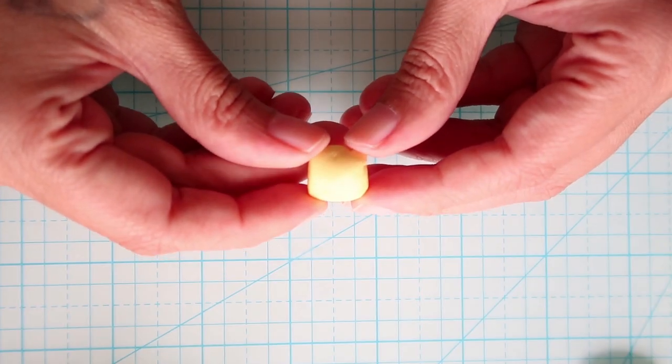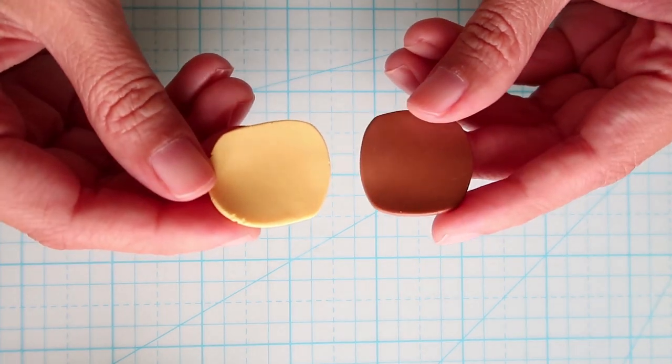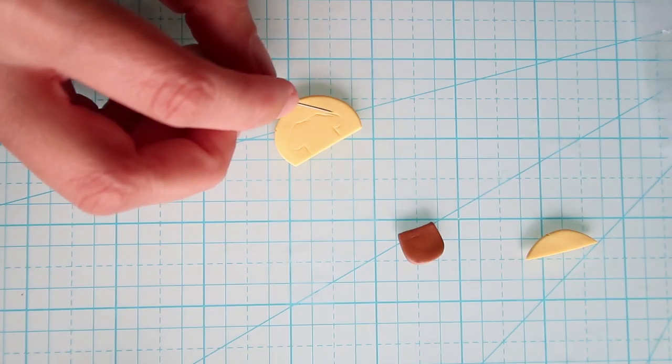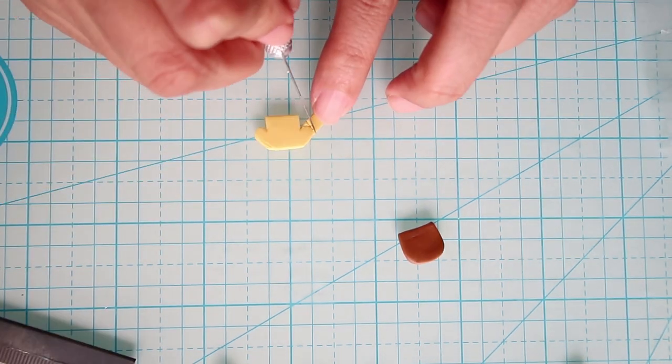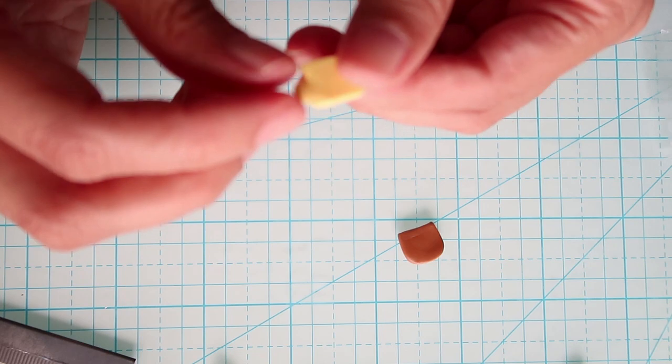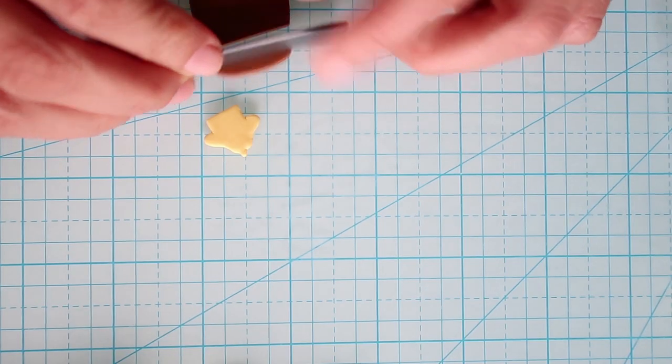Now we're going to make the chair, so roll out a piece of yellow clay and brown clay to the same thickness and then using your needle tool, mark out the design of the chair then using a blade just cut off the excess like this and then smooth the edges so it's nice and rounded. As you may notice in this video it did take me a few tries to get it right.